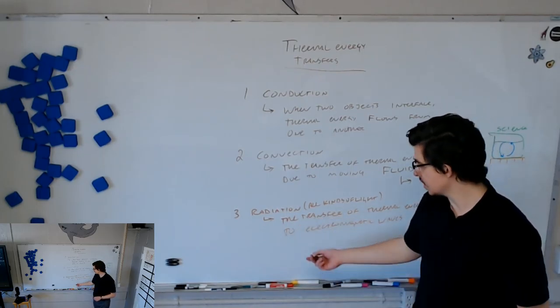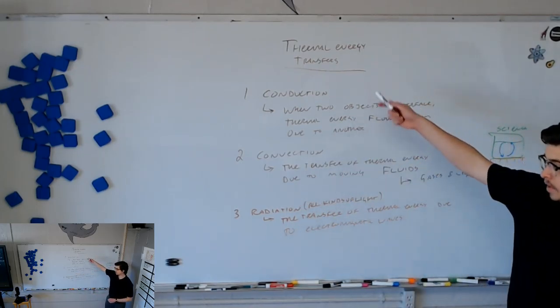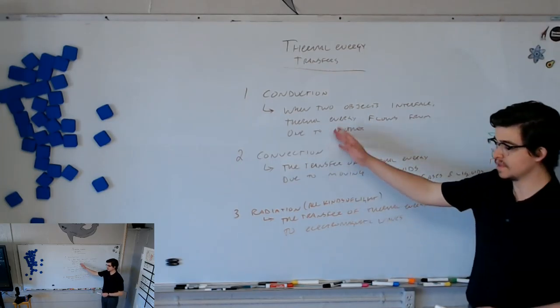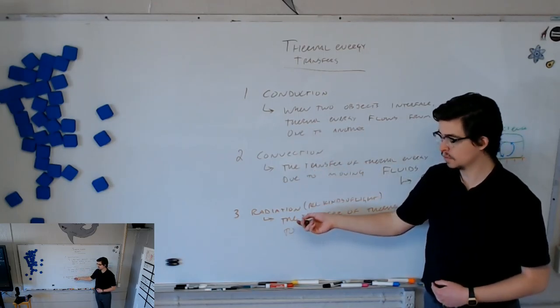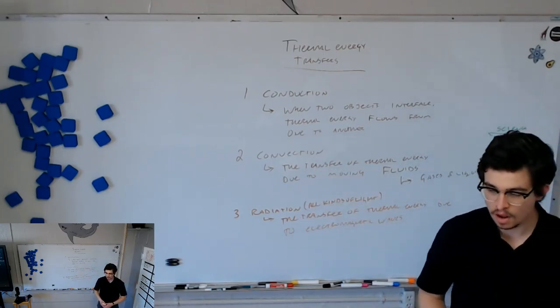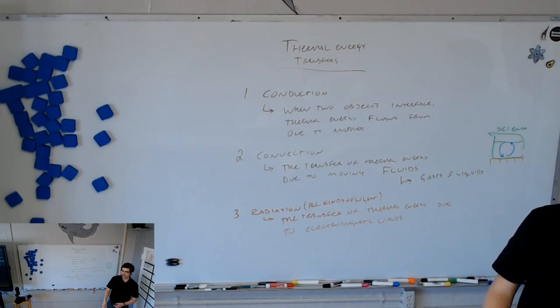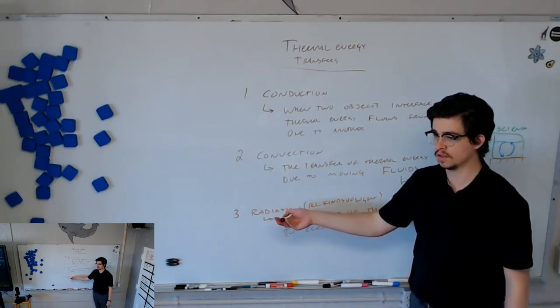This kind of thermal energy transfer is the only one of these that can occur in completely empty space. These ones both require an object to be in contact with another object. This one can occur in completely empty space. All of the light and warmth that we get from the sun is through this process of radiation.